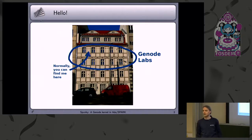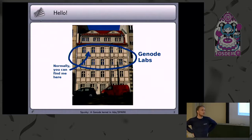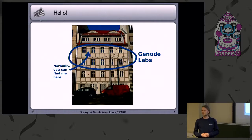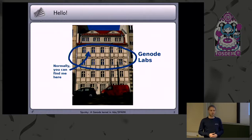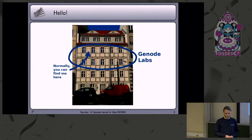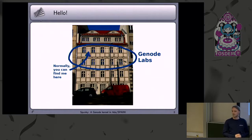I thought about how I can leverage from this — how can I do some EDA in my own system, in Gnode? And I thought, why not write a kernel for it? Because it's the most fundamental task, and I want to trust it the most.